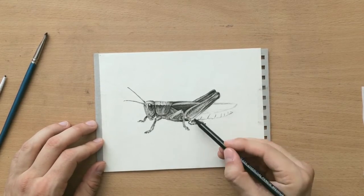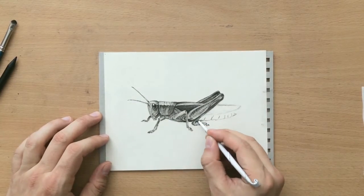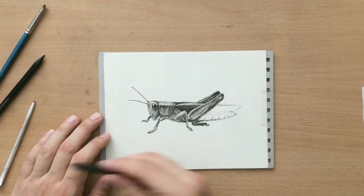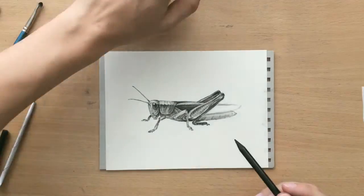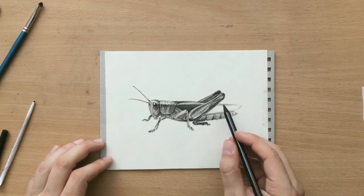And this is the abdomen which also consists of several segments. I used a little bit of vine charcoal there as well but I mostly used these woodless charcoal pencils.